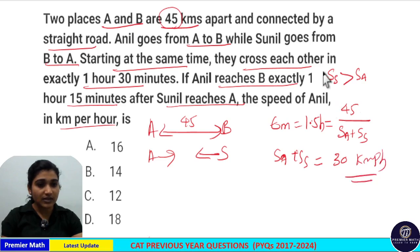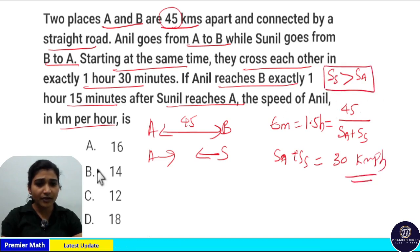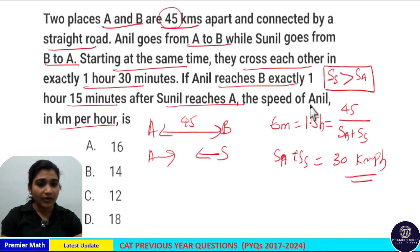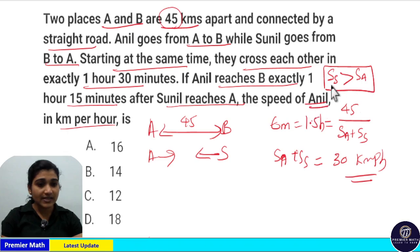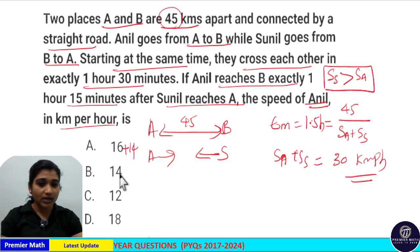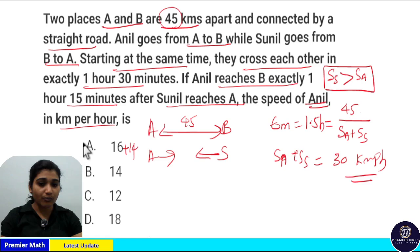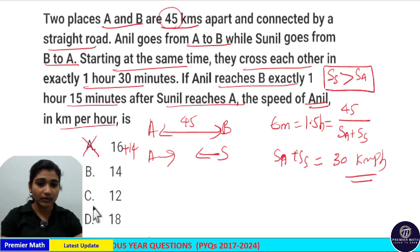From this data and from the options, we can find the answer. We need to find the speed of Anil, which is less than the speed of Sonil. The option 16 plus 14 gives 30, but this is not valid because in this case Anil's speed would be greater than Sonil's speed, which contradicts our condition.